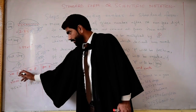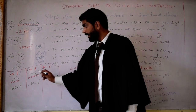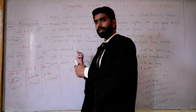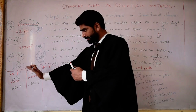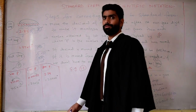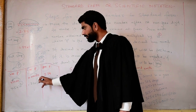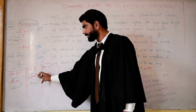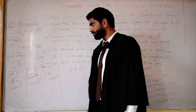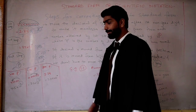If we have to move the decimal from right to the left, then we write the power of 10 as a positive value. If we have to move the decimal from left to right, then we use a negative symbol with the power of 10 — then p will be negative.